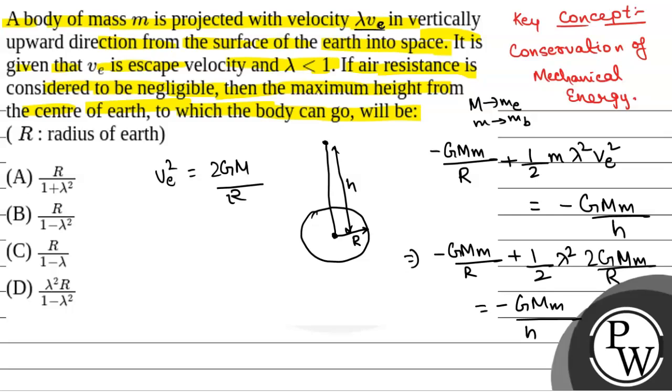So from here we have lambda square by R minus 1 by R is equal to minus 1 by h. Solving for h from here we will have 1 by h is equal to 1 by R minus lambda square by R, or h is equal to R by 1 minus lambda square.